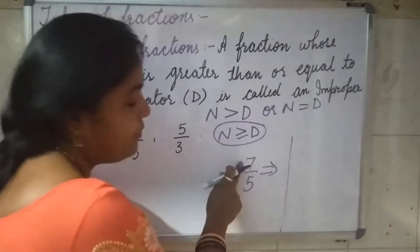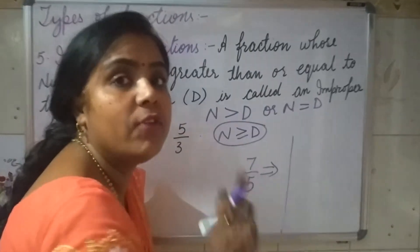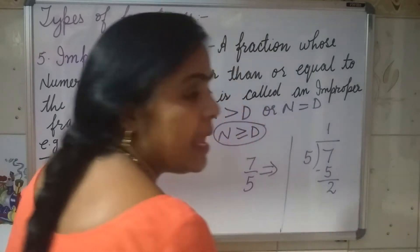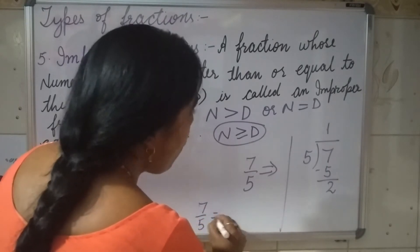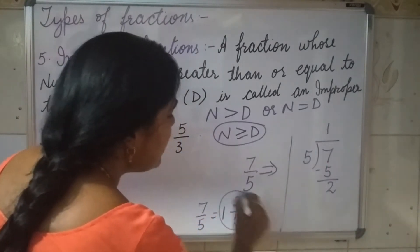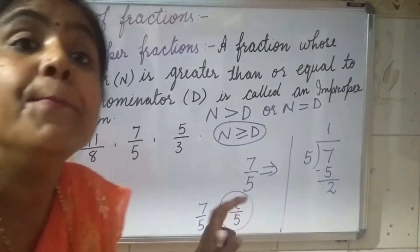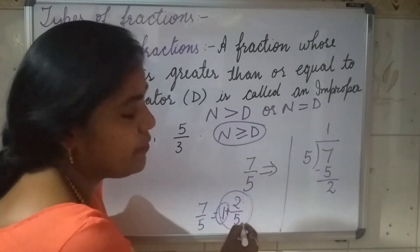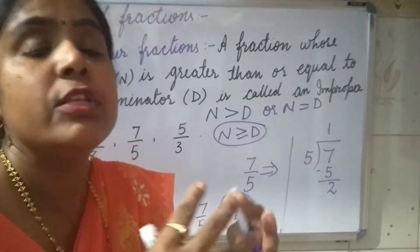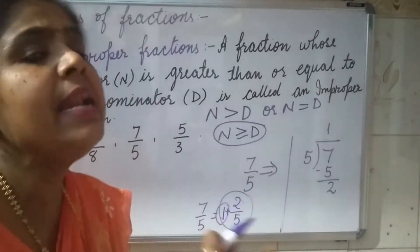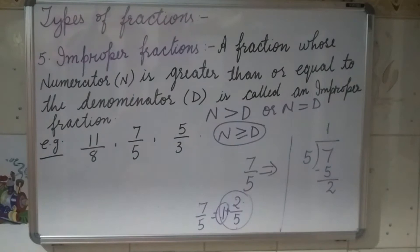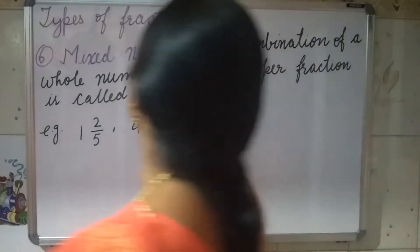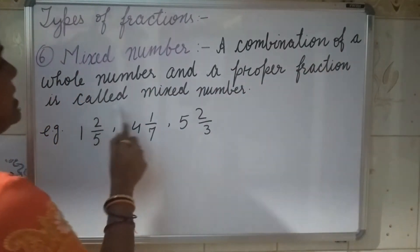Whatever the numerator is, that is always the dividend, and whatever the denominator is, that is always the divisor. Now this 7/5 equals 1 whole 2/5. This is called a mixed number — because it is 1 whole and 2/5, so 1 is the whole number and 2/5 is the fractional number. Whole number and fractional number together make a mixed number. A combination of a whole number and a proper fraction is called a mixed number.